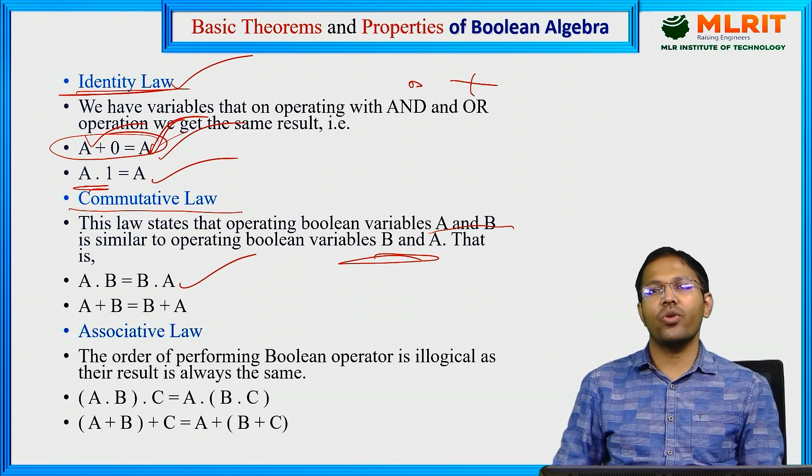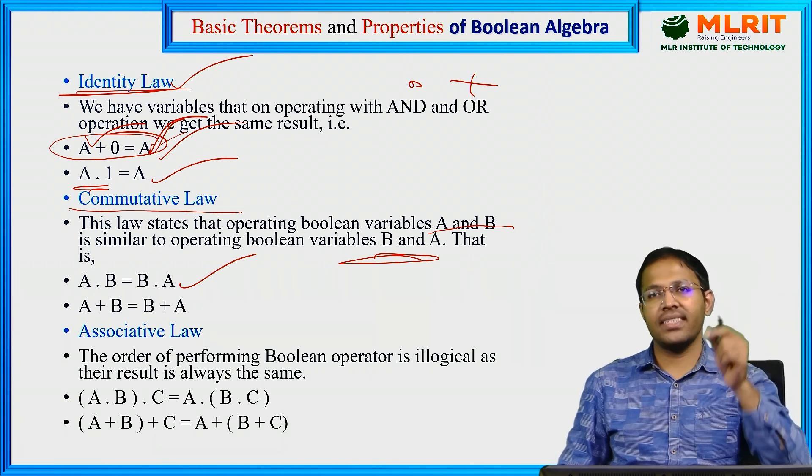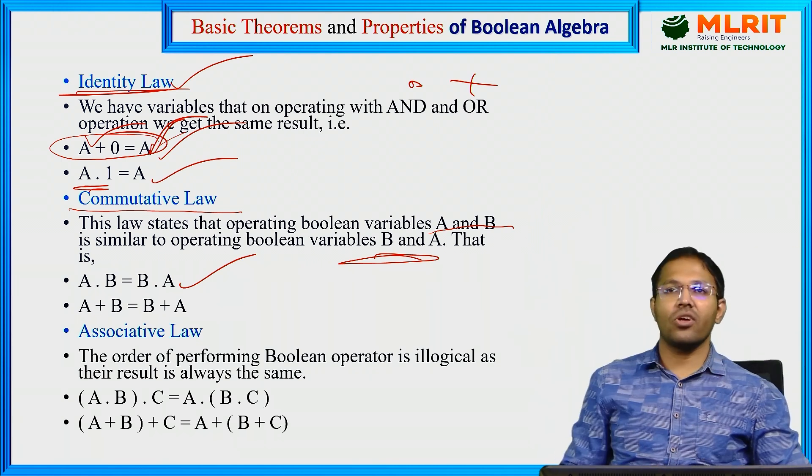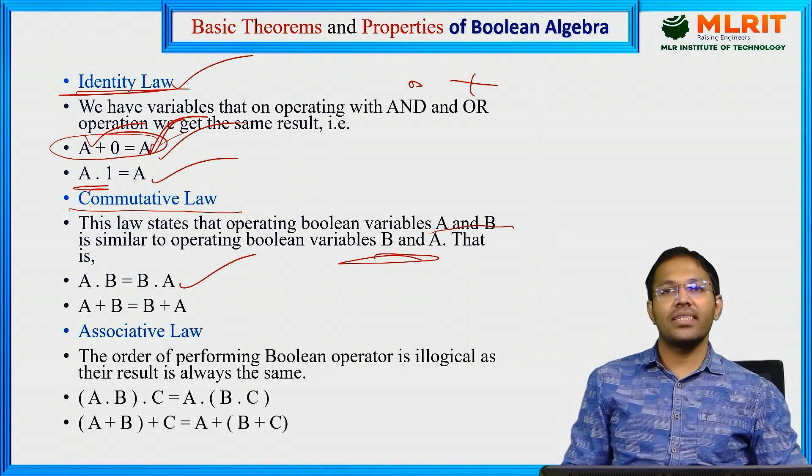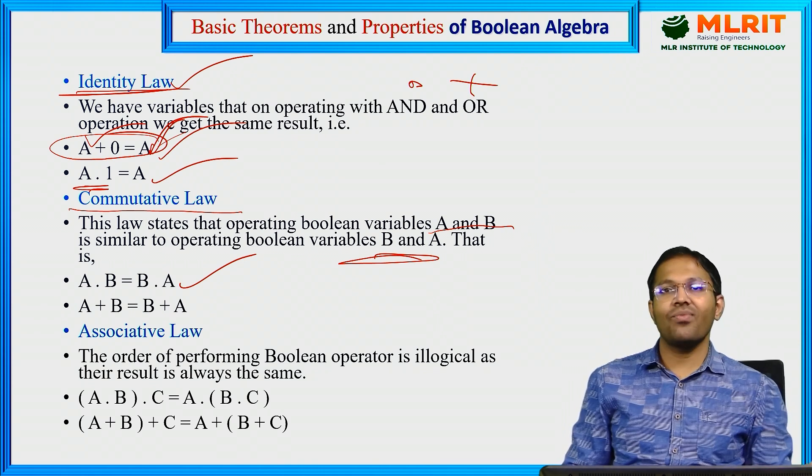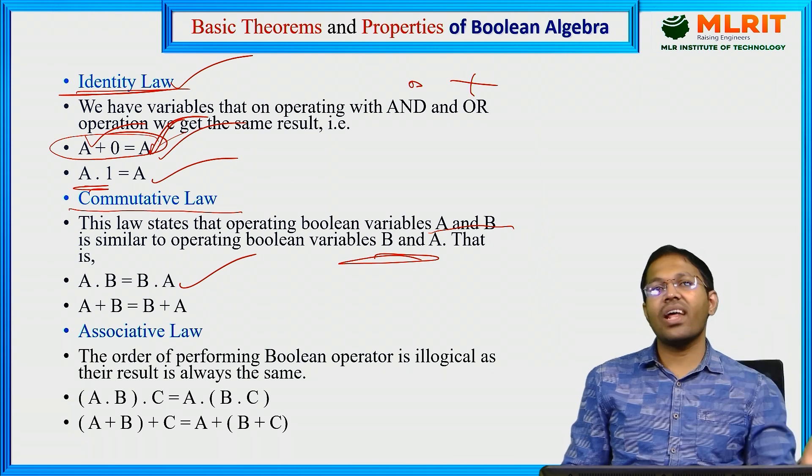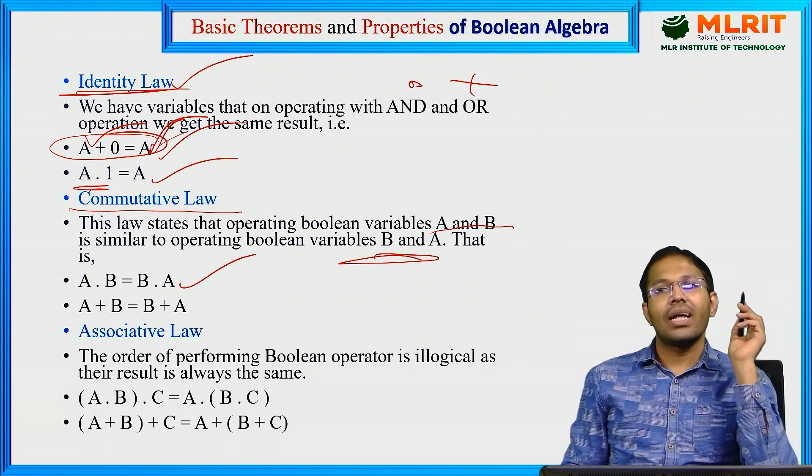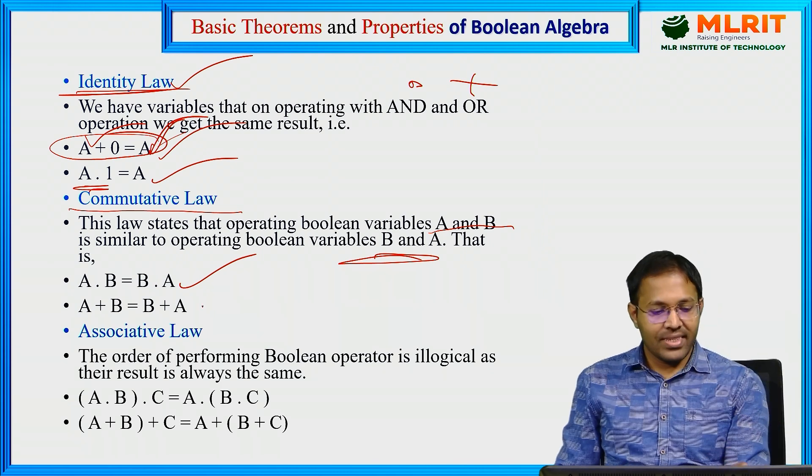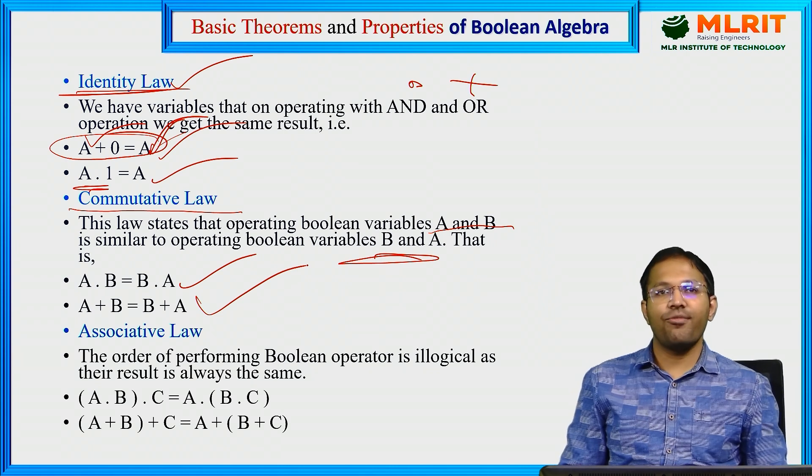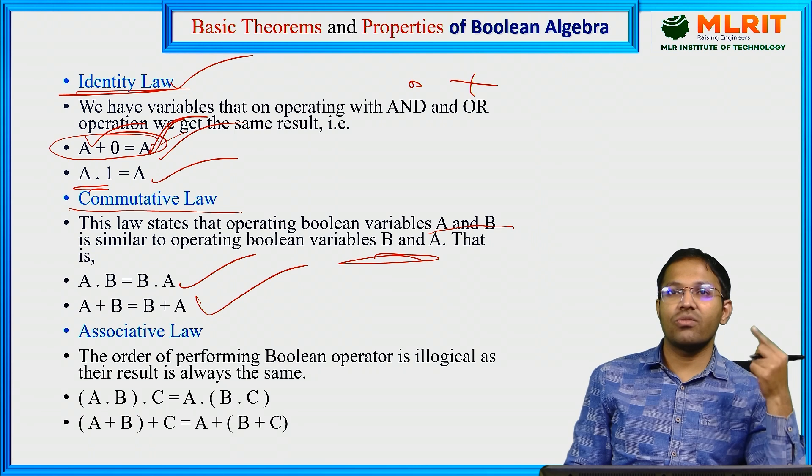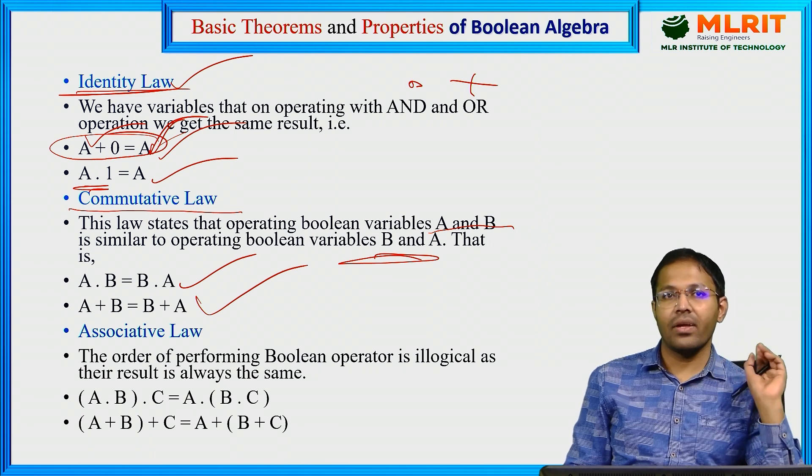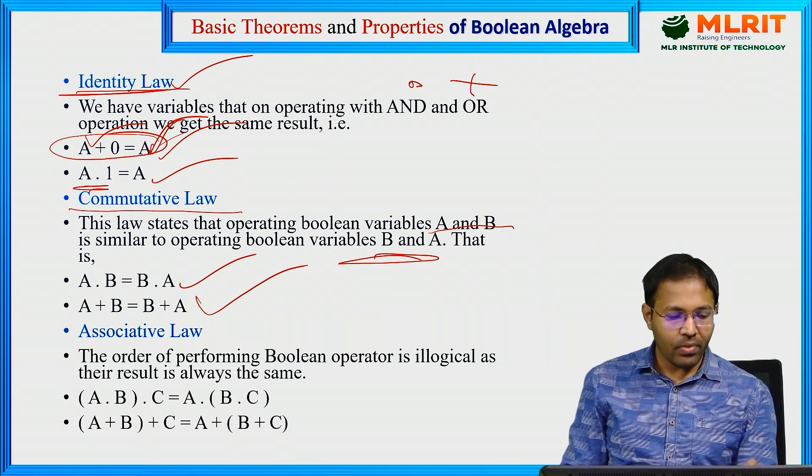2 multiplied by 3 is 6, 3 multiplied by 2 is also 6. Likewise in Boolean algebra, it is valid. Again in regular algebra, 2 plus 3 is 5, 3 plus 2 is also 5. The same is also valid in the case of Boolean algebra. But remember, here the variables, they take either value 0 or 1, not more than that.